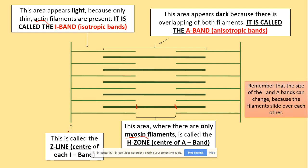We've also got Z-lines. These are the positions that define the sarcomere — where the sarcomere starts and ends. The Z-line is also the middle of the I-band. So the I-band, which was the section of actin only, has the Z-line running through its center. The Z-line marks both the boundary of the sarcomere and the center of the I-band.